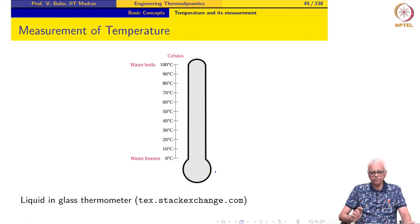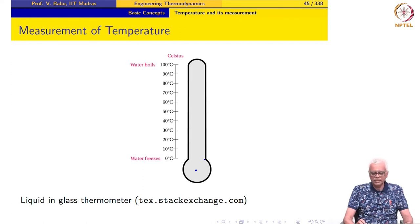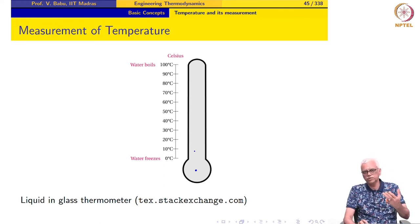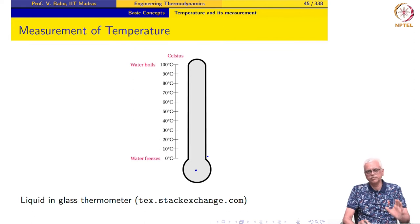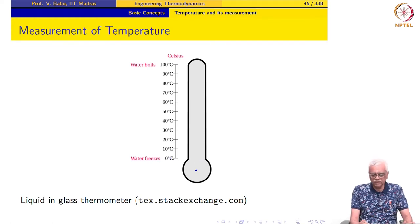Let us look at measurement of temperature. Here we are looking at the simplest thermometer — the humble liquid-in-glass thermometer. We have a liquid inside the bulb; it could be mercury, alcohol, or any other liquid whose properties change with temperature. We start by calibrating the thermometer. We bring the bulb in contact with water that is freezing — everyone agrees that when water freezes under normal conditions its temperature is 0 degrees Celsius — and we note down the level of mercury and mark that as 0 degrees Celsius. That is called a fixed point.